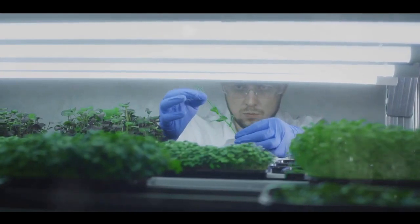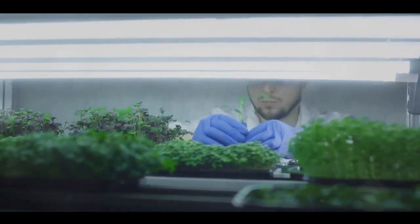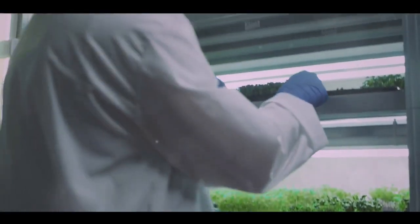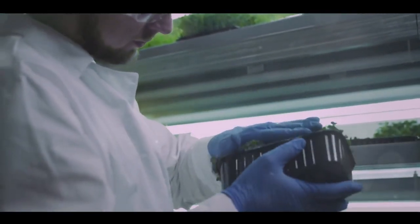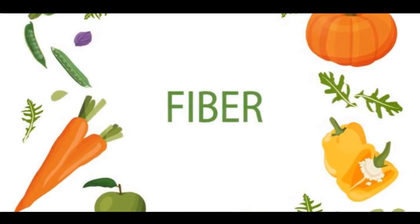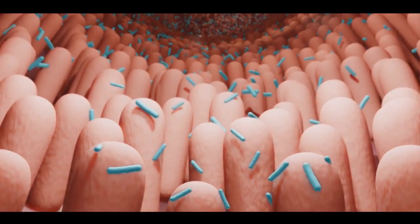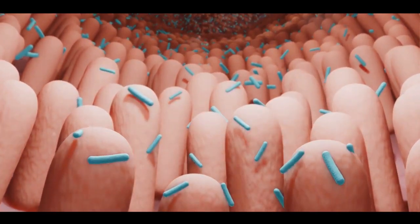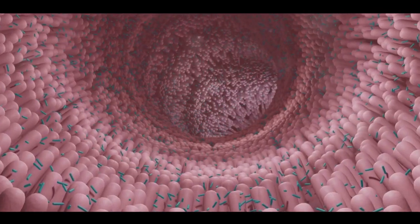Now here's the fascinating part. The composition of our microflora is as diverse as humanity itself. It varies from person to person, and even within different parts of the same person's body. Factors such as diet, environment, age, and genetics can influence this microbial diversity. For instance, a diet rich in fiber can boost the population of bacteria that break down complex carbohydrates. On the other hand, a high-fat diet can favor bacteria that are associated with inflammation.